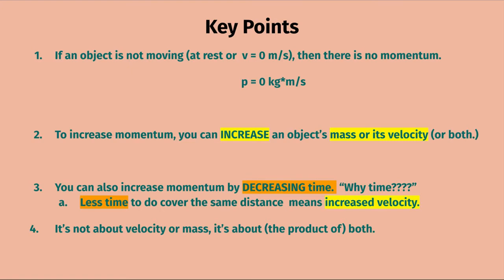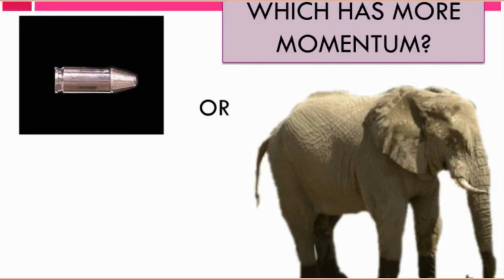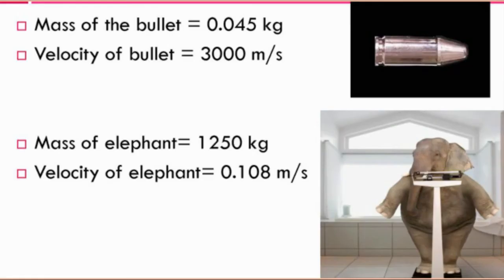Remember, it's not just about velocity or mass — it's about the product of both variables. Consider a bullet and an elephant: which has more momentum? We can't tell without data. The bullet has a mass of 0.045 kg and a velocity of 3,000 m/s. The elephant has a mass of 1,250 kg and a velocity of 0.108 m/s.